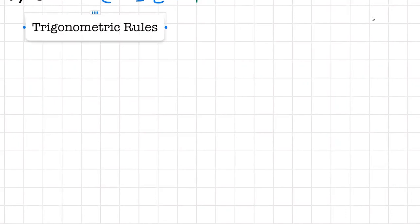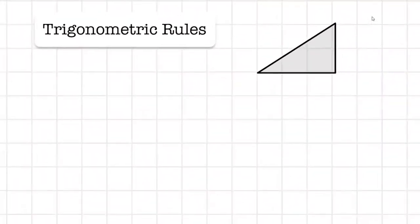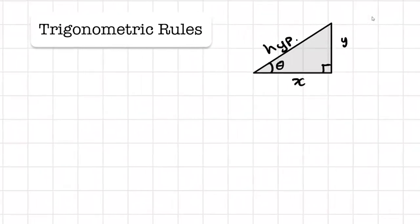For the trigonometric rules, let's start simple with the Pythagorean theorem. We have a right triangle — we're going to label this side as y, this side as x, this is our hypotenuse, and this is our angle theta. If we write the Pythagorean theorem: the sum of the squares equals the hypotenuse squared, so x squared plus y squared is equal to the hypotenuse squared — a squared plus b squared equals c squared.